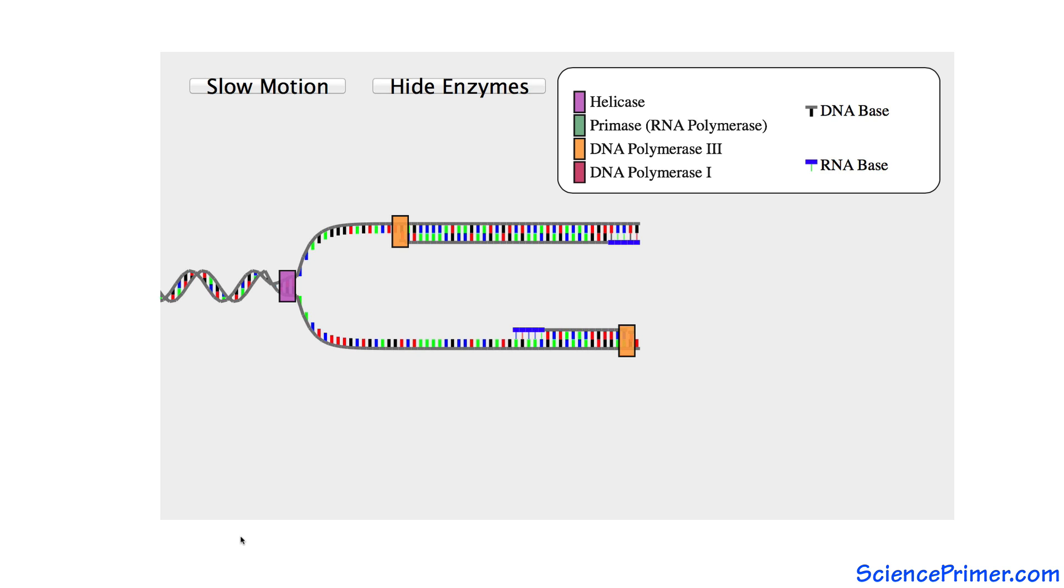On the lagging strand, the new strand's 3' hydroxyl end points away from the replication fork, forcing the elongation process to occur in a discontinuous manner.